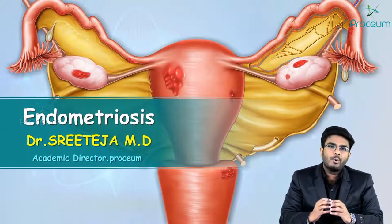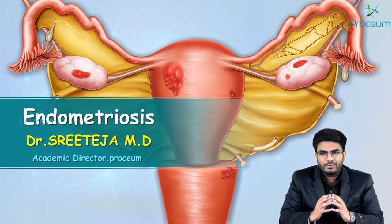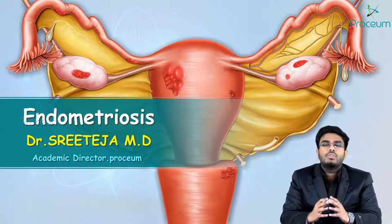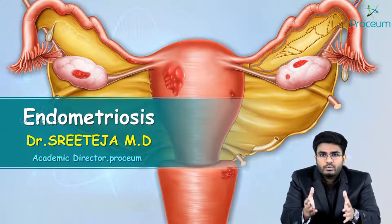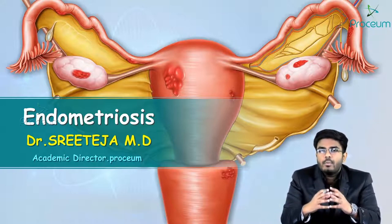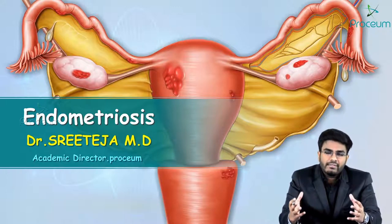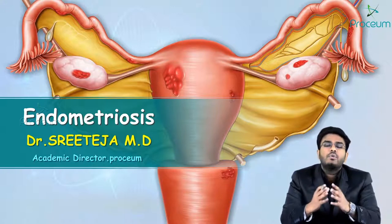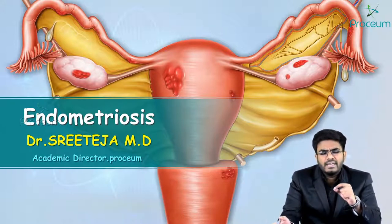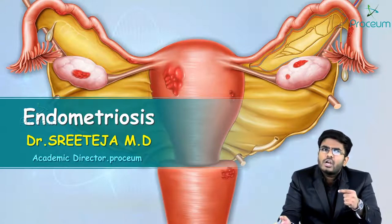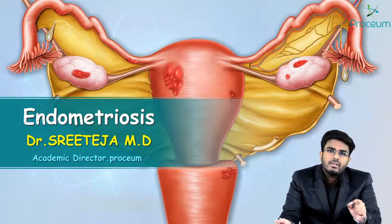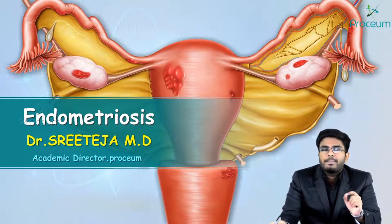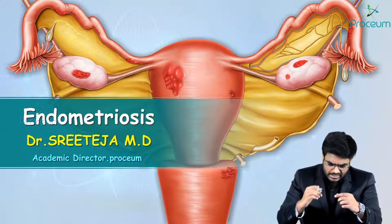In this video, let's discuss endometriosis. Endometriosis means growth of endometrial tissue outside the uterine cavity. We all know that the endometrium lines the uterine cavity; if it grows outside on some other organs, we call it endometriosis. Any structure in the body can be affected — with one exception: the spleen.